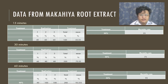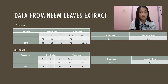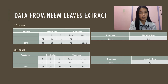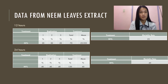The totality of the data is now gathered from the Makahiya root extract. At the 60-minute mark, with 50% water and 50% extract, the three replications are: first at 80%, second at 100%, and third at 100%, with a total of 280% and a mean of 93.33%, giving a mortality rate of 93. For the Neem leaf extract data: at 12 hours with 50% treatment, replication 1 is 20%, replication 2 is 30%, replication 3 is 20%, total 70%, mean 23.33%, mortality rate 23. At 24 hours with 50% treatment, replications 1, 2, and 3 are each 40%, total 120%, mean 40%, and mortality rate 40.